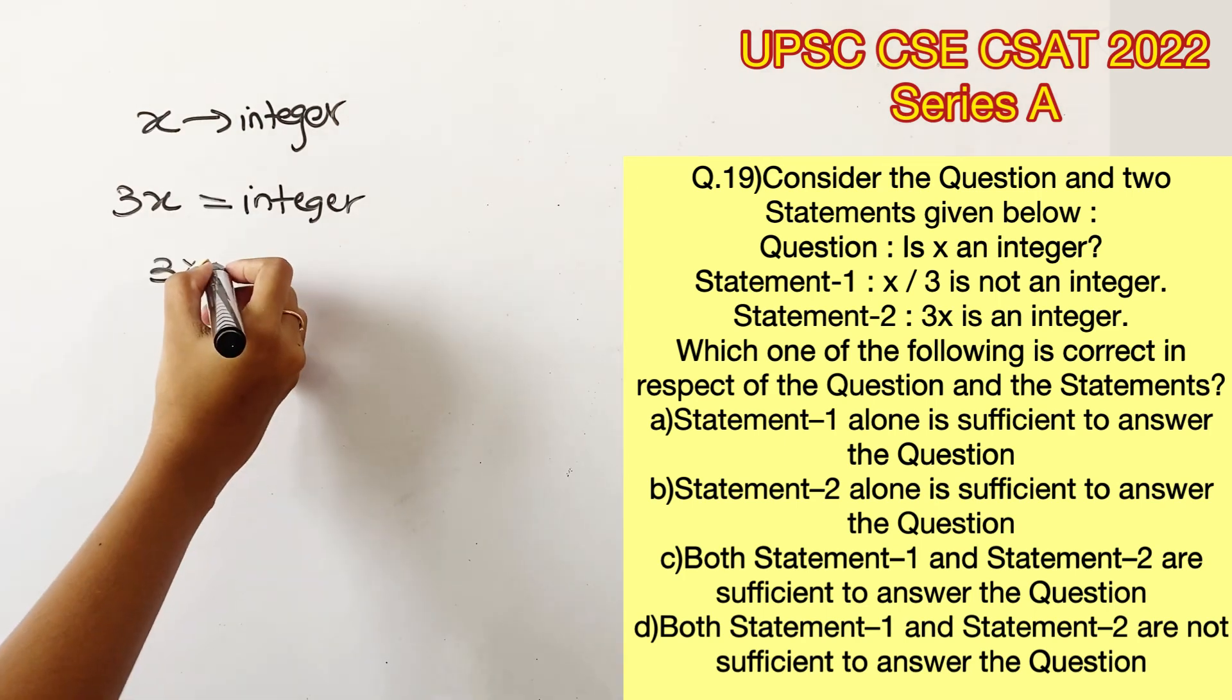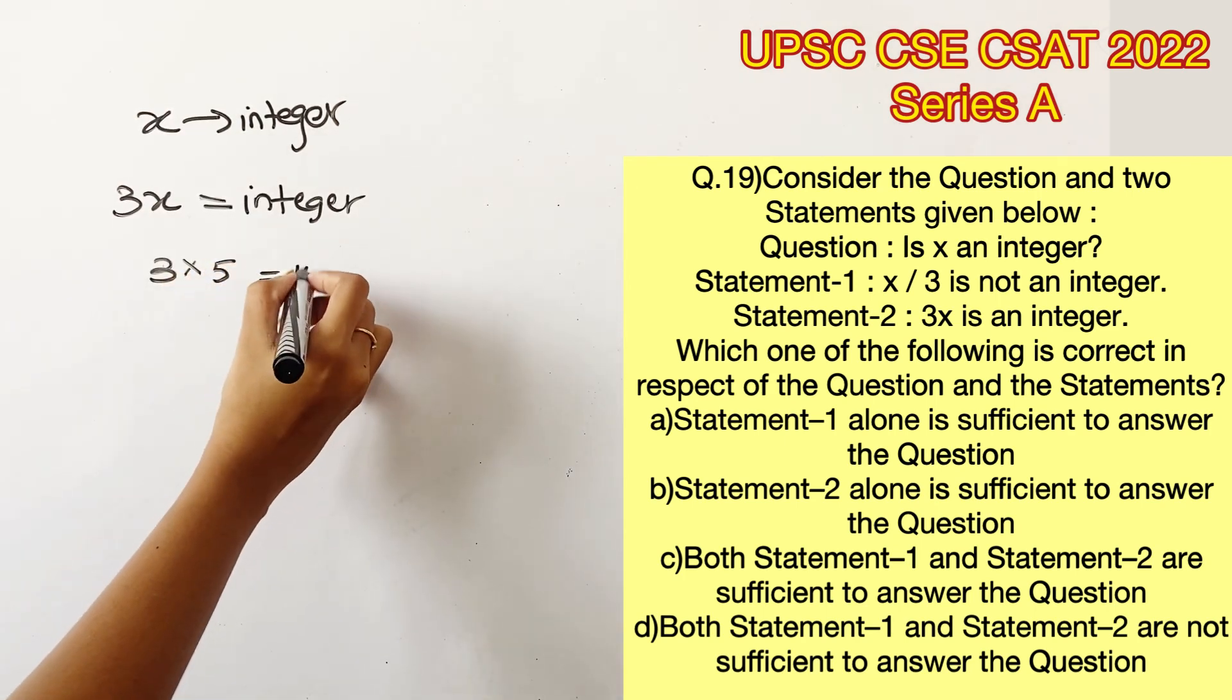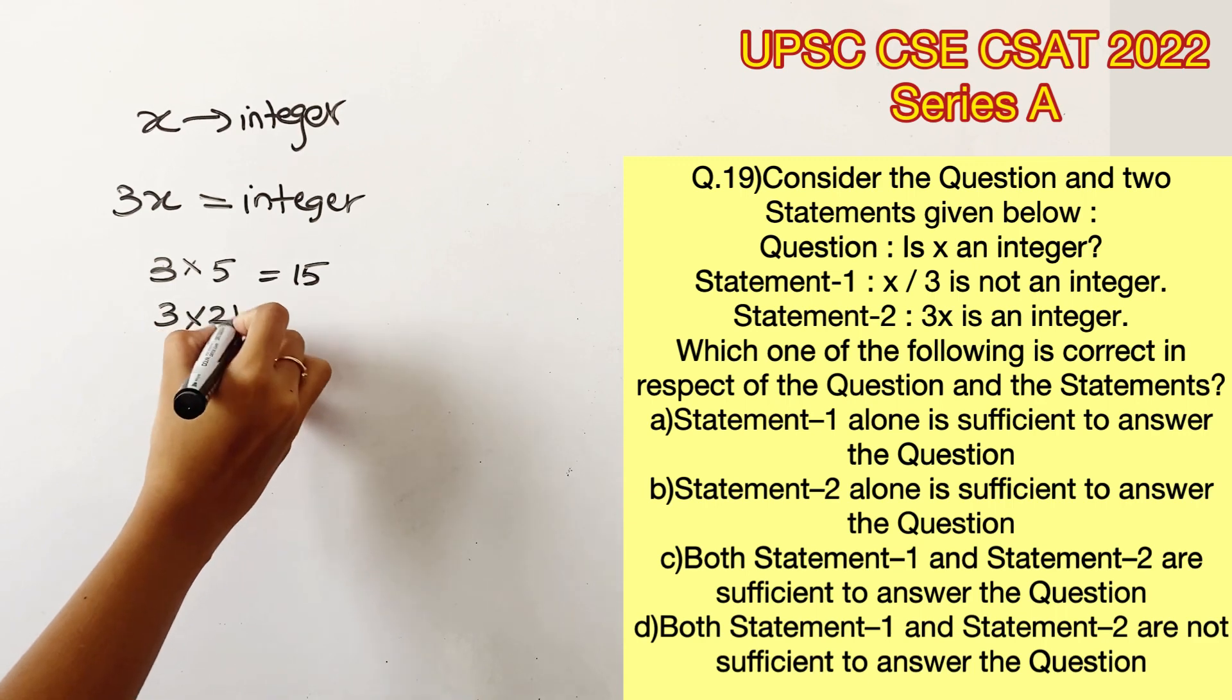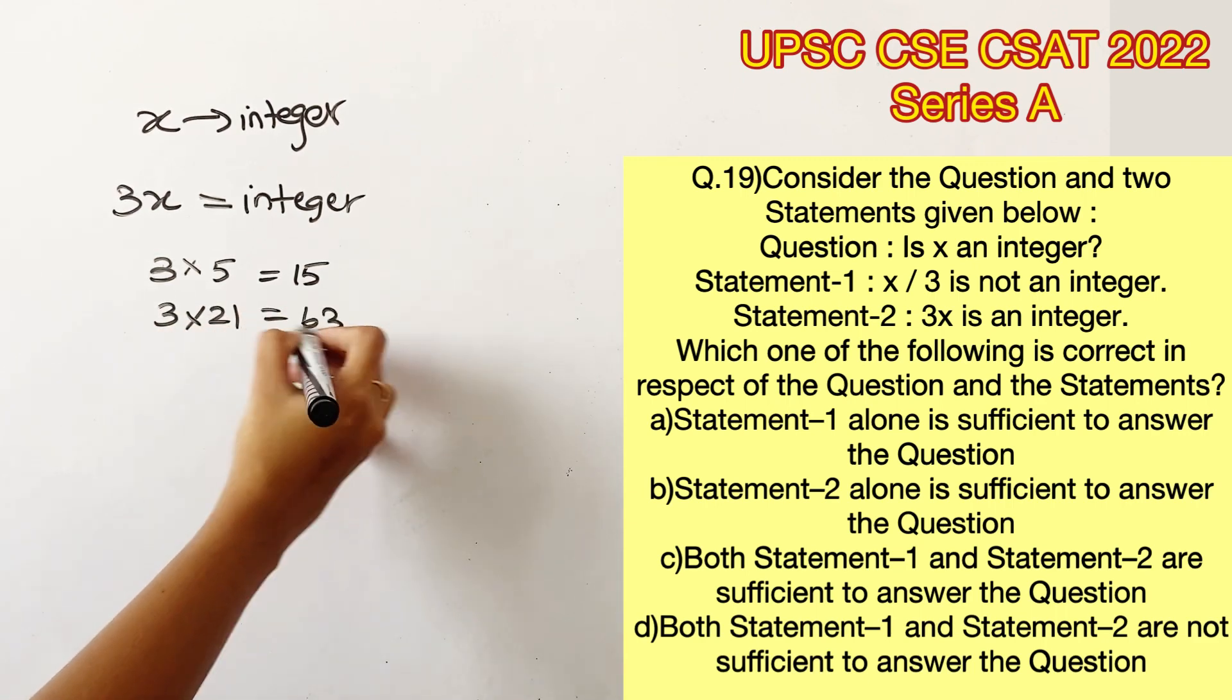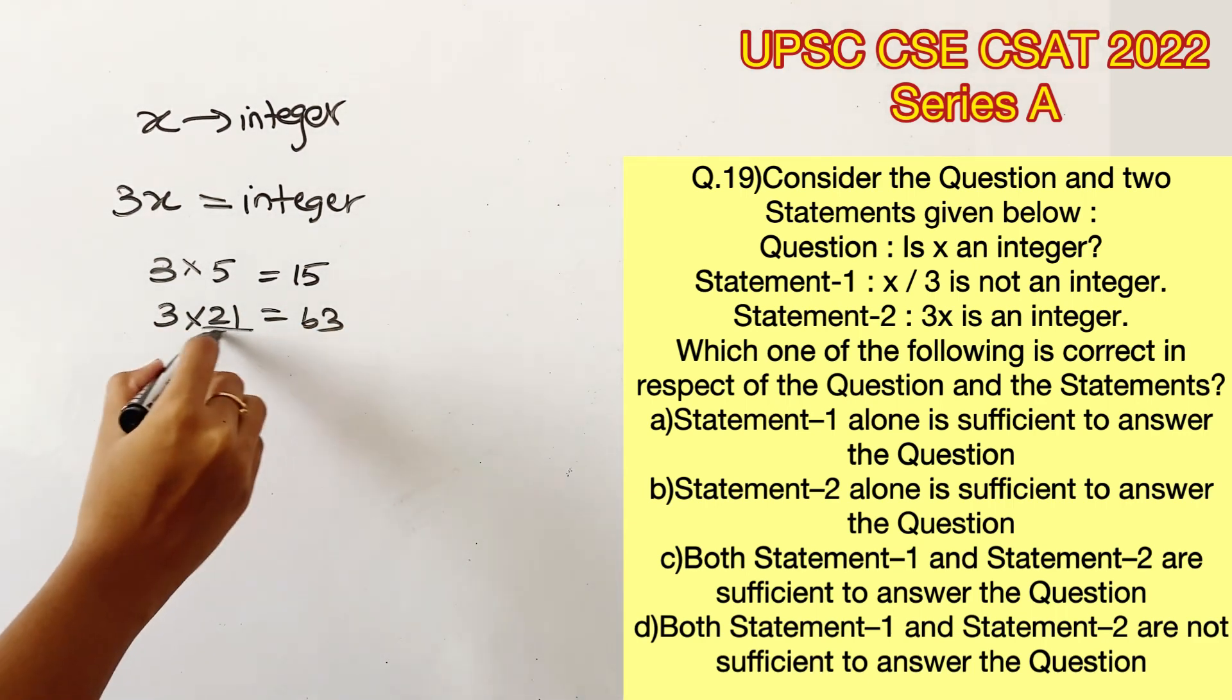3x is an integer. Now let's try an integer value in the place of x. I'm taking 5, which will give us 15. Take 21, we are going to get 63. Now let's take a decimal value in the place of x.